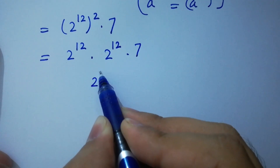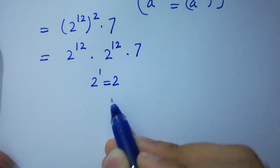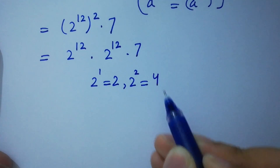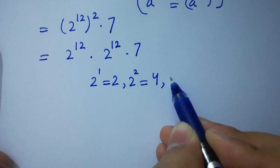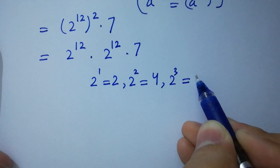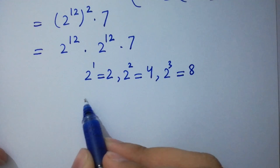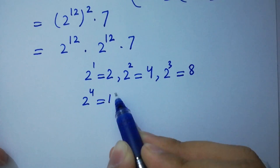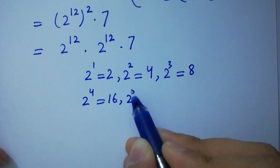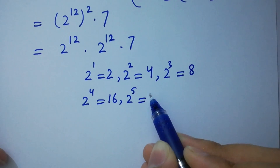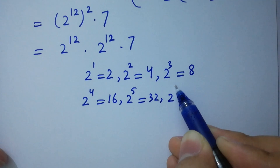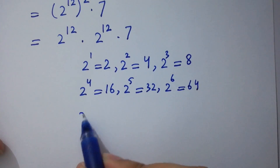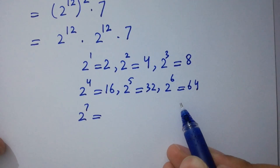As we know: 2 to the power 1 equals 2; 2 to the power 2 equals 4; 2 to the power 3 equals 8; 2 to the power 4 equals 16; 2 to the power 5 equals 32; 2 to the power 6 equals 64.